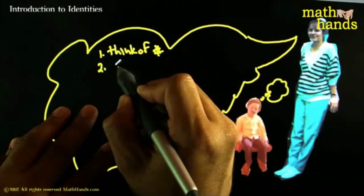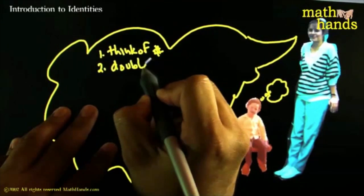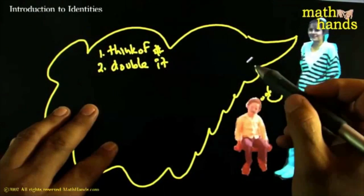Think of a number. And then she'd say, Double it. And so I'd say, Okay, I'll double it. And so in my mind, I would double it.